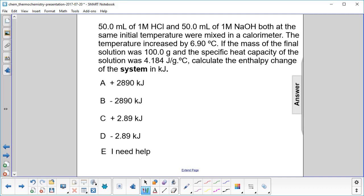We have 50 milliliters each of 1 molar hydrochloric acid and sodium hydroxide. They have the same initial temperature and are mixed in a calorimeter. The temperature increased by 6.90 degrees Celsius.